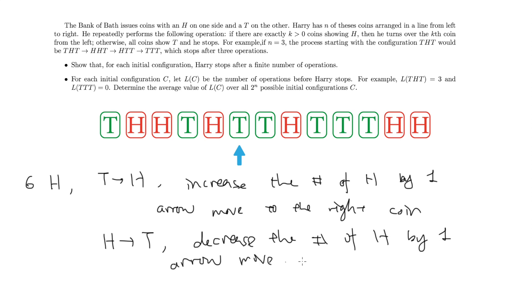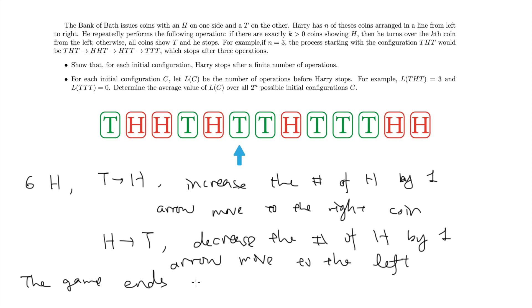Basically, there is this arrow moving on consecutive coins, and the game ends if and only if we achieve the 0th position. So now let me show you a small animation of the entire process on this particular example.